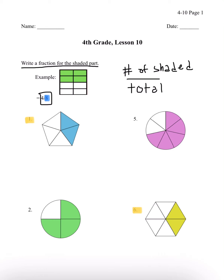I'll be going over number 1, 3, 6, and 8. So on page 1, we have 1 and 6. Number 1, let's count how many we have: 1, 2, 3, 4, 5. So our total is 5, which is going to be our bottom. And as you can see here, we have 2 shaded only. So 2 is going to be our number shaded, which is our numerator.